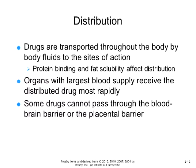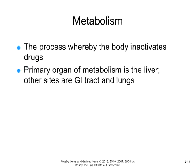Organs with the largest blood supply receive the distributed drug most rapidly — the heart, liver, kidneys, and brain. However, distribution can be general or selective, which is why some drugs cannot pass through the blood-brain barrier or the placental barrier.